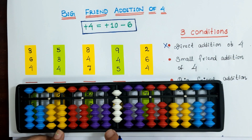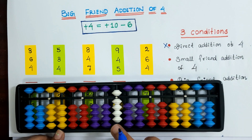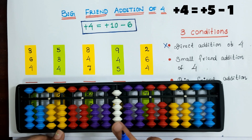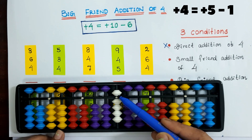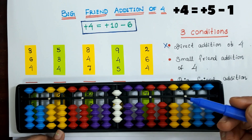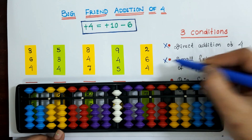Now, let's check for the small friend addition of 4. What is the formula for the small friend addition of 4? Plus 4 is plus 5 minus 1. Here at the one slot we have already used the upper bits whose value is 5. So, small friend addition of 4 is not possible.